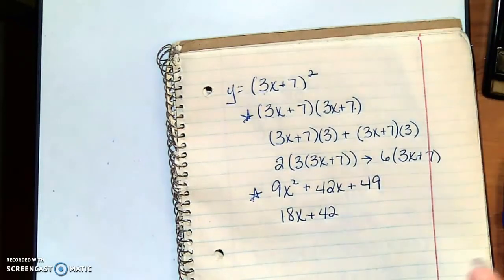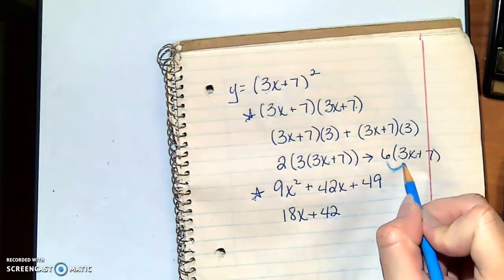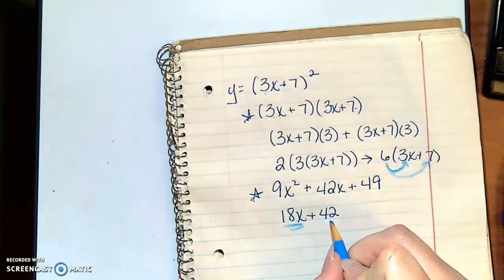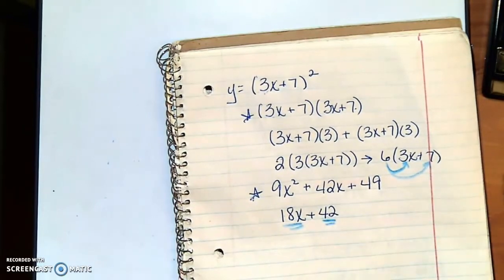If you look at that, you will notice that 6 times 3 is 18x, 6 times 7 is 42. So I got the same answer either way.